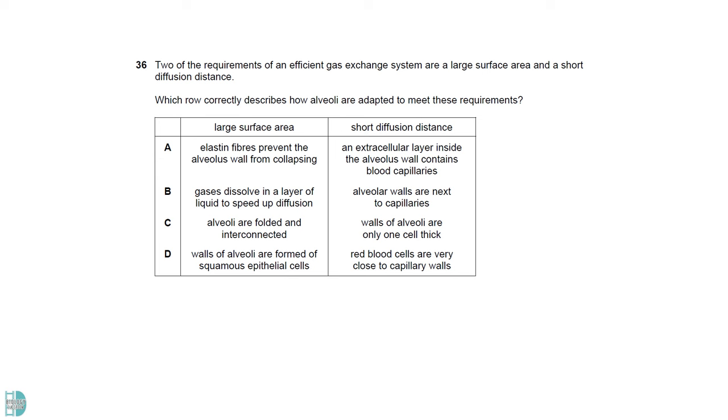The column for short diffusion distance contains the correct statements for all the options. All these features reduce the diffusion distance of gases. However, in the large surface area column, statements A, B and D have nothing to do with the surface area of alveoli.